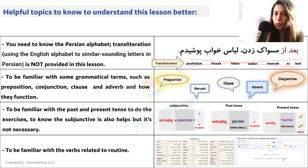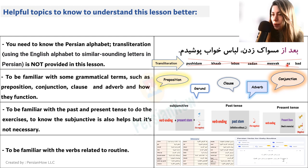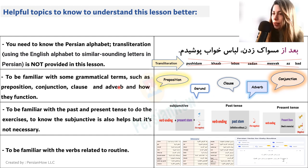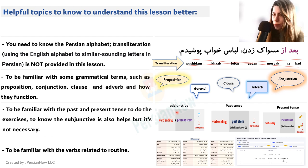All right, now let's start the lesson. Before we start, there are a few points that would be helpful for you. The first one is knowing the Persian alphabet, because no transliteration is provided in this lesson — that means using the English alphabet to represent similar-sounding letters in Persian. At this point, you already kind of need to know the alphabet. Next, it would be very helpful if you're familiar with grammatical terms such as preposition, gerund, clause, and conjunction. Knowing these terms will help you understand this lesson a lot easier. There will also be a lot of examples in present tense and past tense, so you need to know these two tenses. I have some examples for subjunctive and present perfect, but I'm briefly going over them, so you don't need to know those.